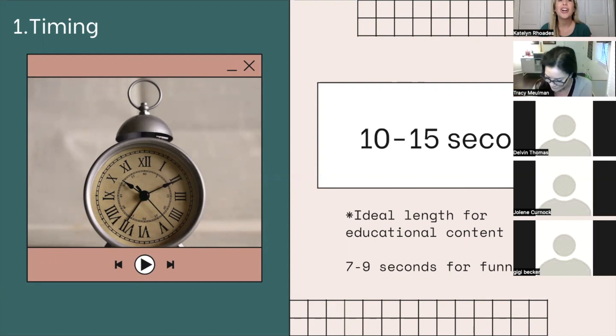The best performing reels are typically very short. There's two different sides to this. If you're doing an educational or valuable type reel, the best timing is going to be between 10 to 15 seconds.